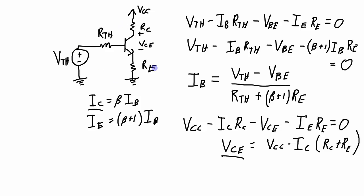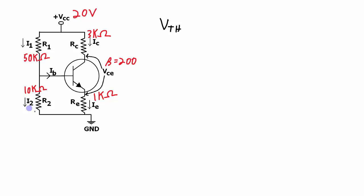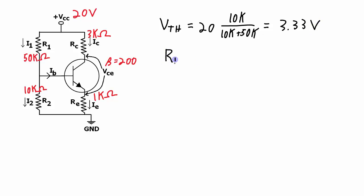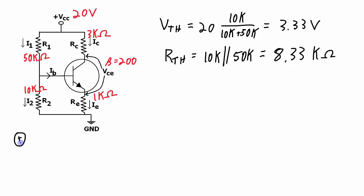Here is an example circuit, so let's do the analysis to find the operating point. First I want to find the Thevenin equivalent source being applied at the base — the voltage divider between R1 and R2. That gives a voltage of 3.33 volts through a resistance based on the parallel combination of R1 and R2, which is the 10K in parallel with the 50K resistor, giving 8.33 kilo-ohms. So this part of the circuit is replaced with 8.33 kΩ and 3.33 V applied to the base.